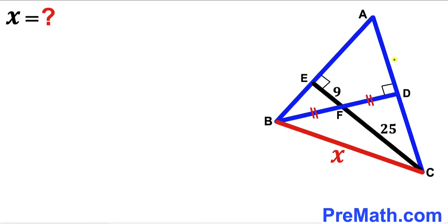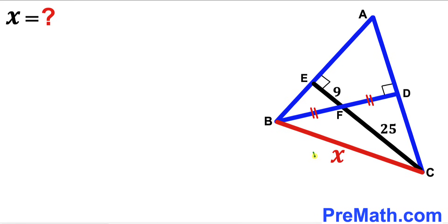Welcome to pre-math. In this video we have got triangle ABC along with two perpendicular segments BD and CE, as you can see in this given diagram, such that these two perpendicular segments intersect each other at point F.